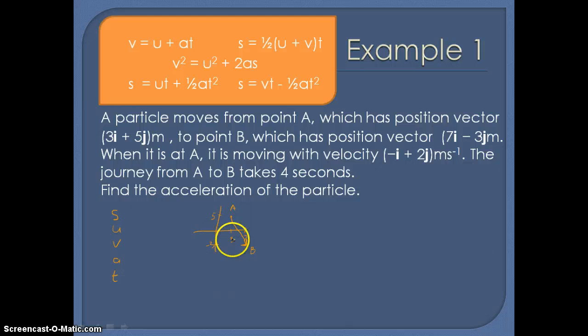So horizontally we travel from 3 to 7. So this must have been 4i. And vertically we've gone from 5 down to minus 3, which would be minus 8j. So we need to calculate S first.